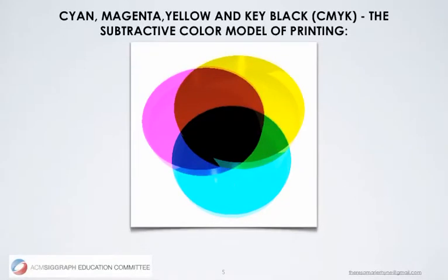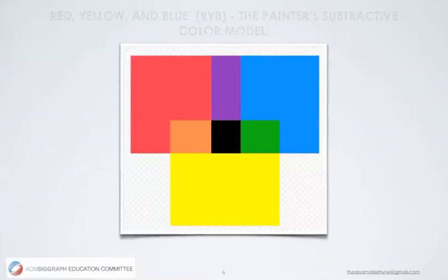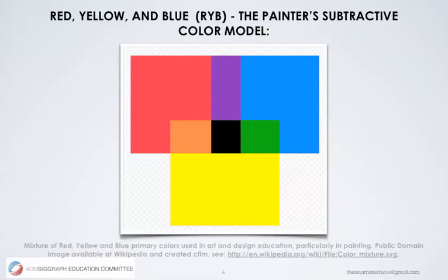We're going to look at cyan, magenta, yellow, and key black. Key black is added to support the printing of text. This is a subtractive color model for printing. If we look in the center, it shows black; surrounding it is red, green, and blue. So these two models are reversely related to one another. Now let's look at red, yellow, and blue — the painter subtractive color model. In the center we see a sort of brownish-black tone, and secondary colors become orange, green, and purple. The painter subtractive color model is used by interior designers, architectural spaces, and has been used for centuries by painters and artists.